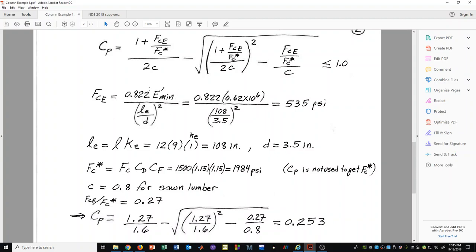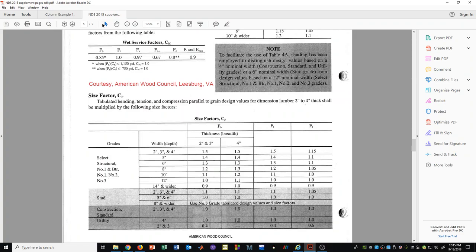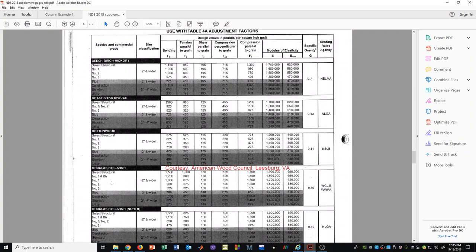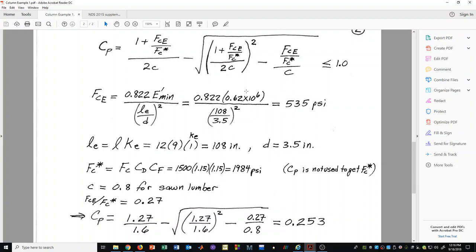Right here we have E prime minimum. We would need to go to our NDS supplement and look for that value. For Douglas fir number 1, E prime minimum is 0.62 times 10 to the 6 psi. We can see here for E prime minimum I have 0.62 times 10 to the 6.